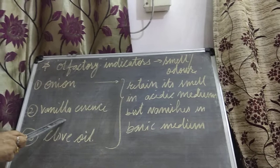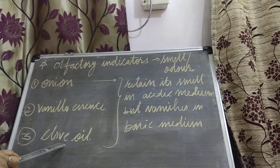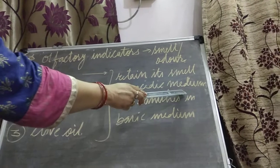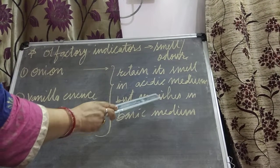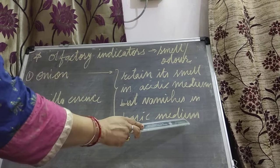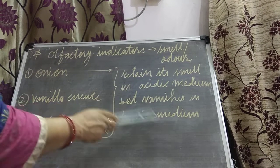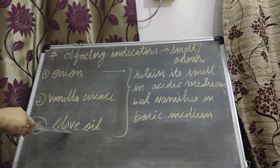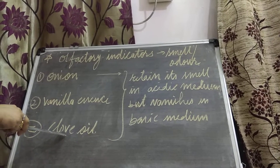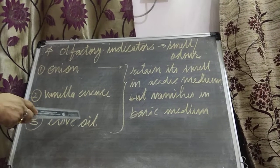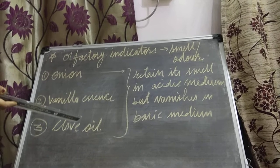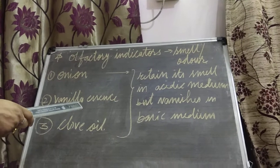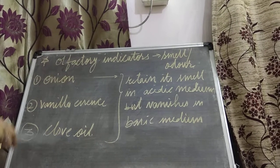The same is the case with vanilla essence and clove oil — all three retain their smell in acidic medium, but the smell vanishes in basic medium. So by using these three olfactory indicators, we can identify acids and bases. Read from the NCERT book, which you can download from the internet. If you have any difficulty, you can ask me. For today, this much is there. Be safe, students. Thank you.